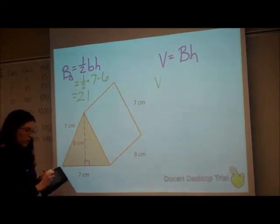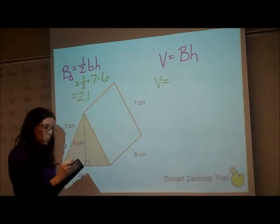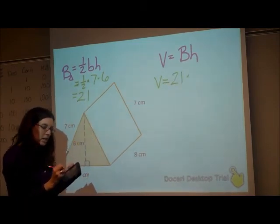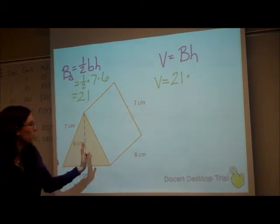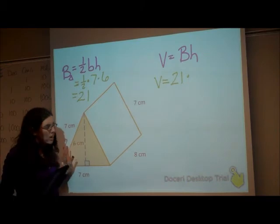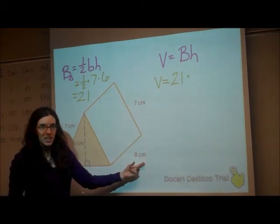So now going over here, volume is going to be area of the base, which was 21, times the height of the prism. The height is how tall is that when it's standing on its base. So standing on this triangle, how far up does it go? That's where my 8 came in.